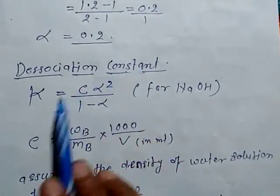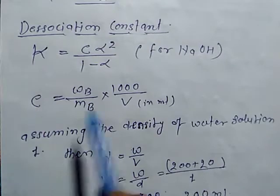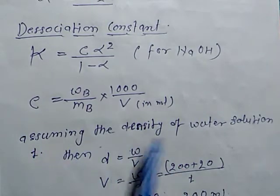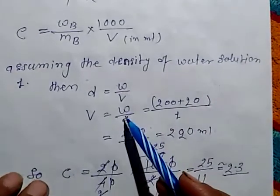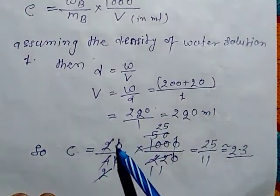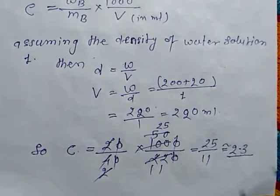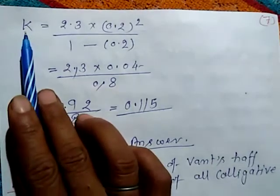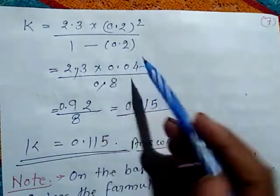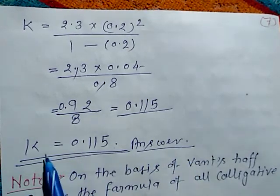To find the dissociation constant, use K = cα² / (1 − α). First calculate concentration c = (W_B / M_B) × (1000 / V). Assuming density = 1, total mass = 220 g, so V = 220 mL. Thus c = (20/40) × (1000/220) ≈ 2.3 mol/L. Then K = 2.3 × (0.2)² / (1 − 0.2) = 2.3 × 0.04 / 0.8 ≈ 0.115, approximately 0.15. This is the dissociation constant.